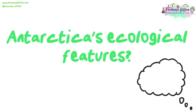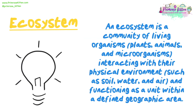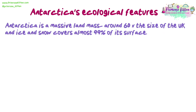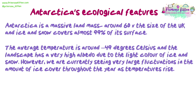What are Antarctica's ecological features? Antarctica is a massive landmass, around 60 times the size of the UK, and ice and snow covers almost 99% of its surface. The average temperature is around minus 49 degrees Celsius, and the landscape has a very high albedo due to the light colour of ice and snow. However, we are currently seeing very large fluctuations in the amount of ice cover throughout the year as temperatures rise.